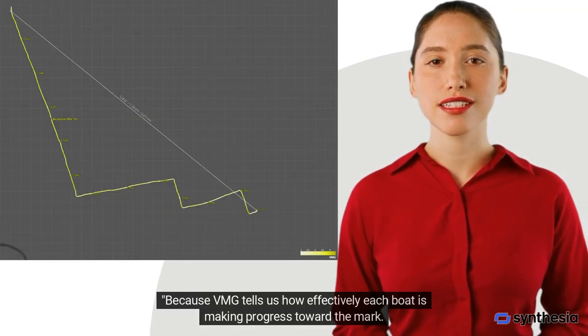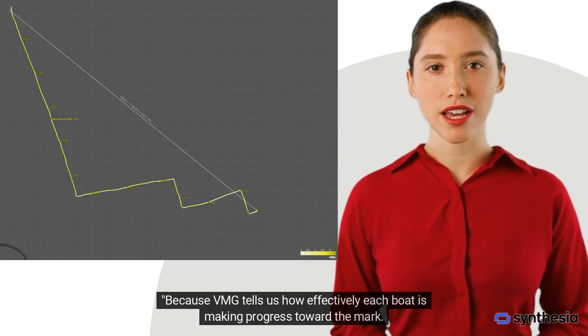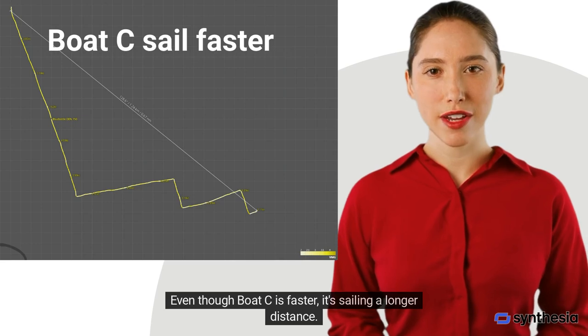Because VMG tells us how effectively each boat is making progress toward the mark, even though boat C is faster, it's sailing a longer distance.